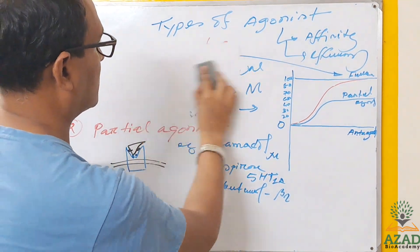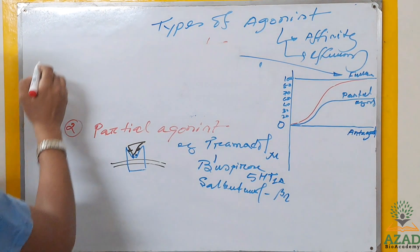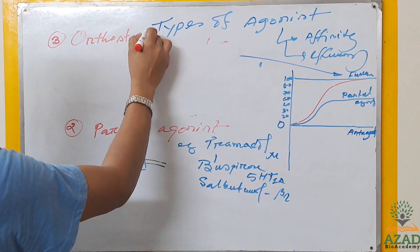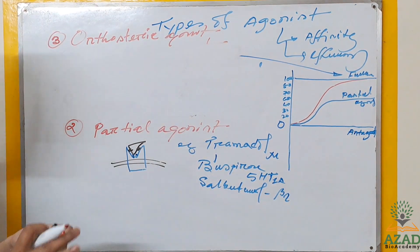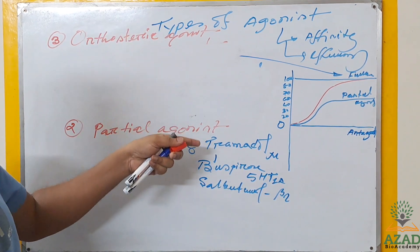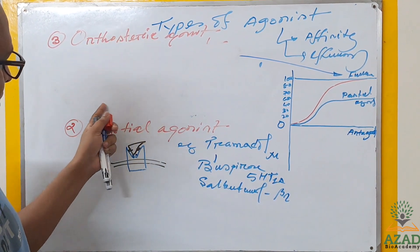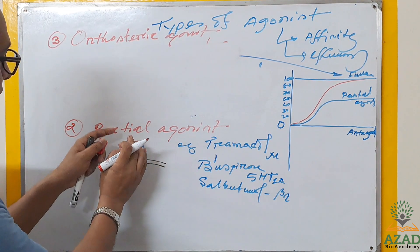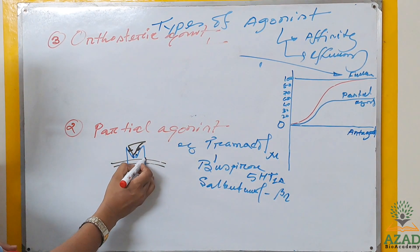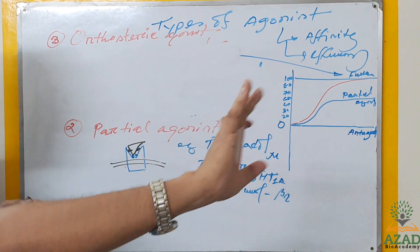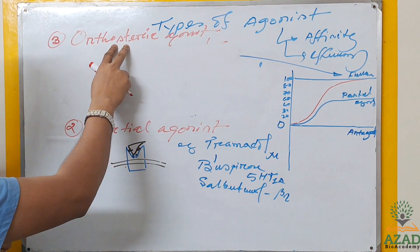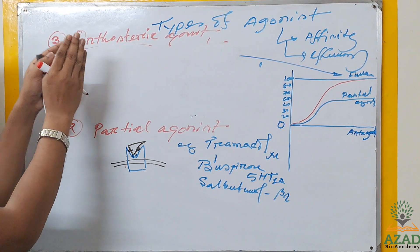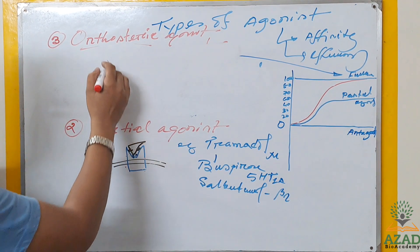The third type is orthosteric agonist. Orthosteric means it binds the main active binding site of the receptor — whether partial or full, that doesn't matter. What matters is that it binds the main binding site. When a drug binds with the main binding site of the receptor, that is called an orthosteric agonist.